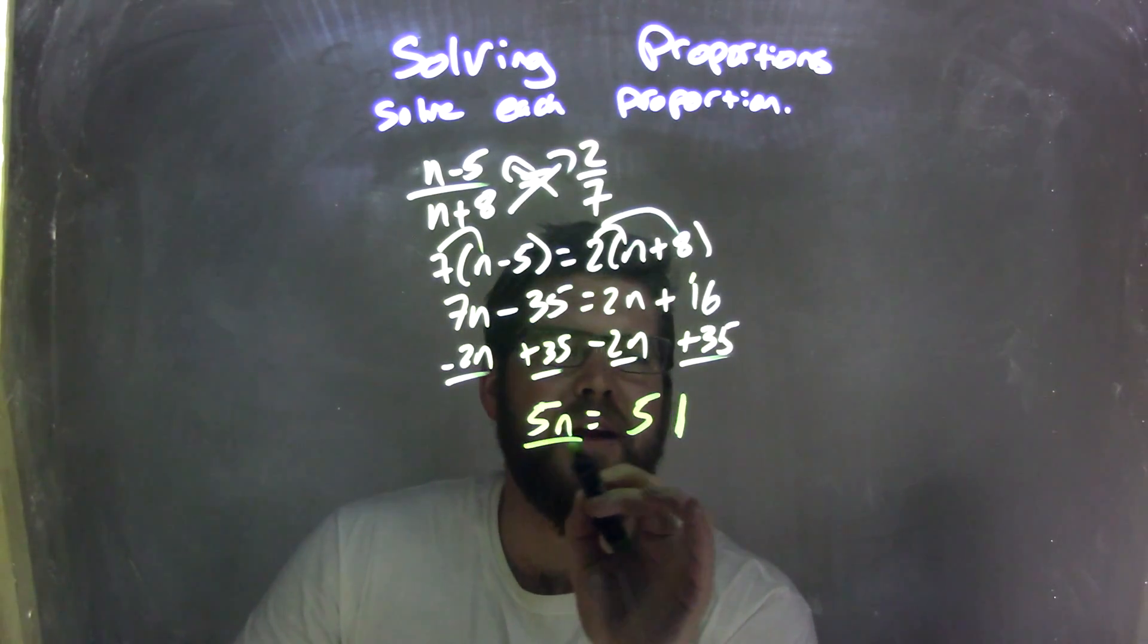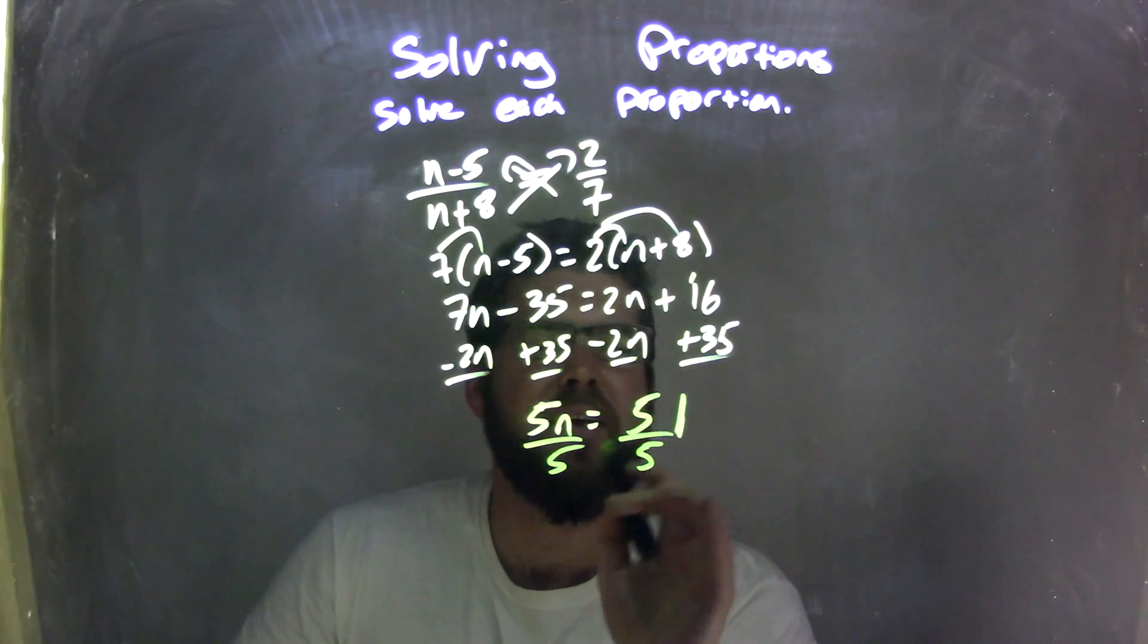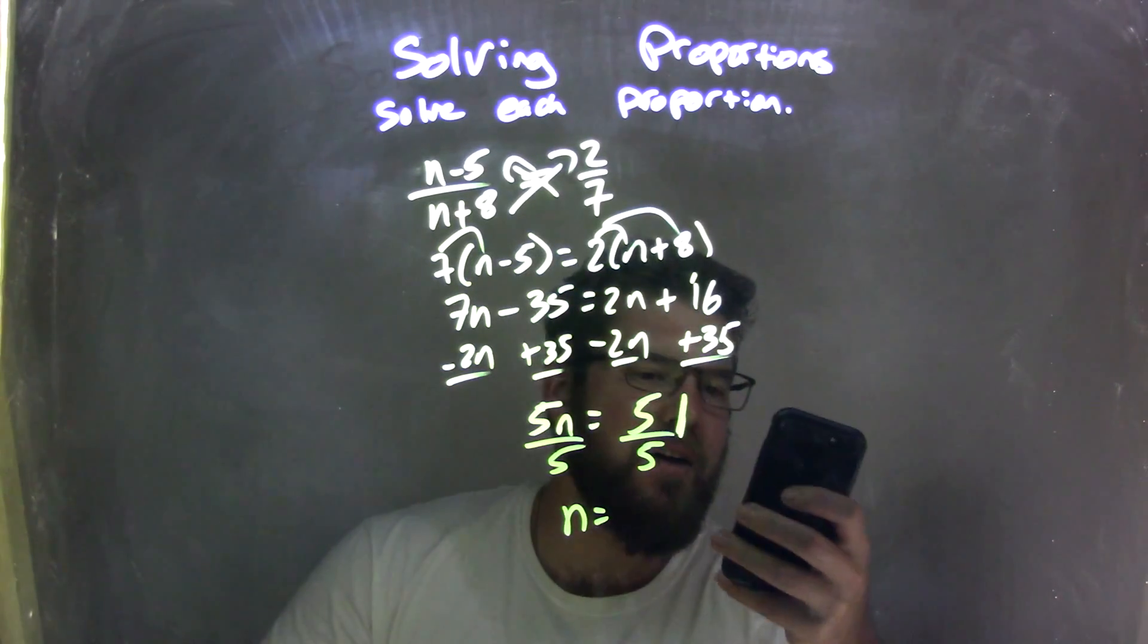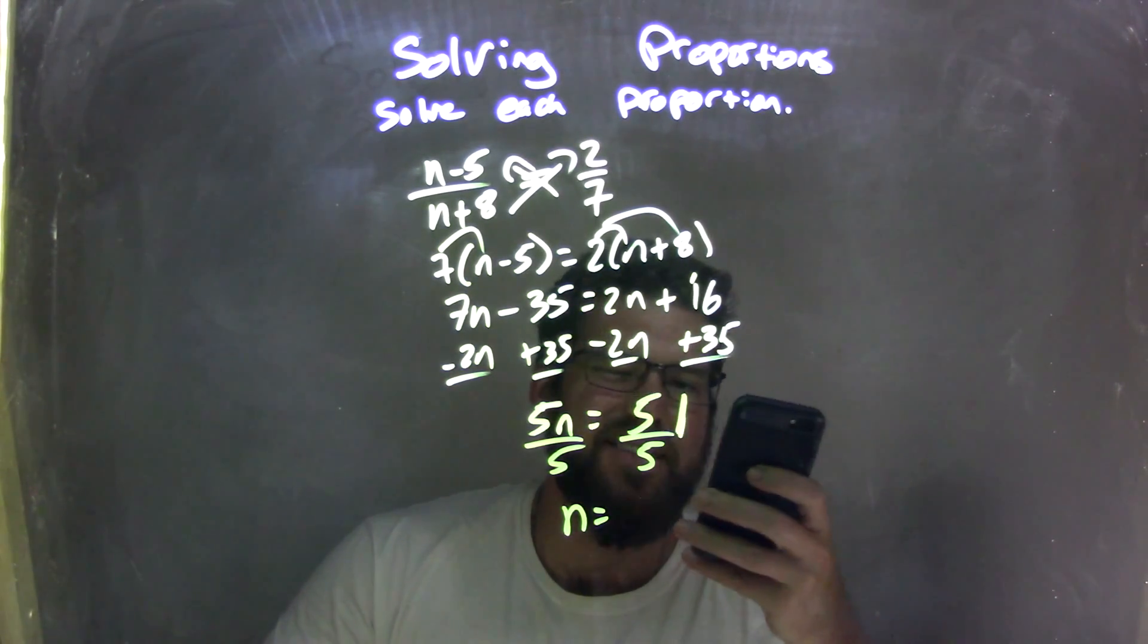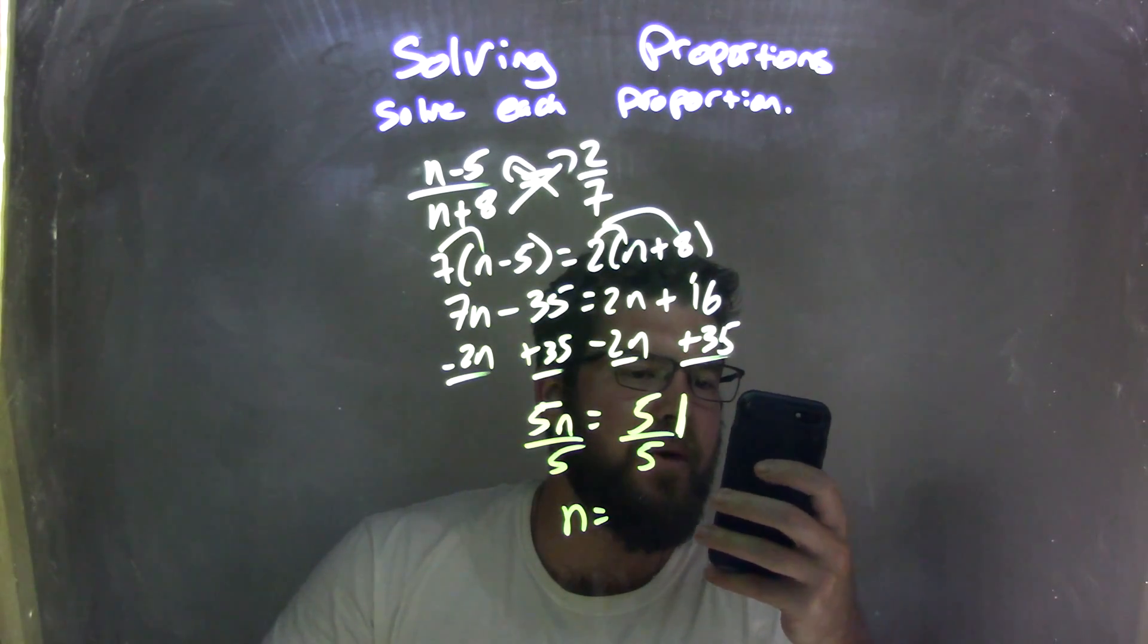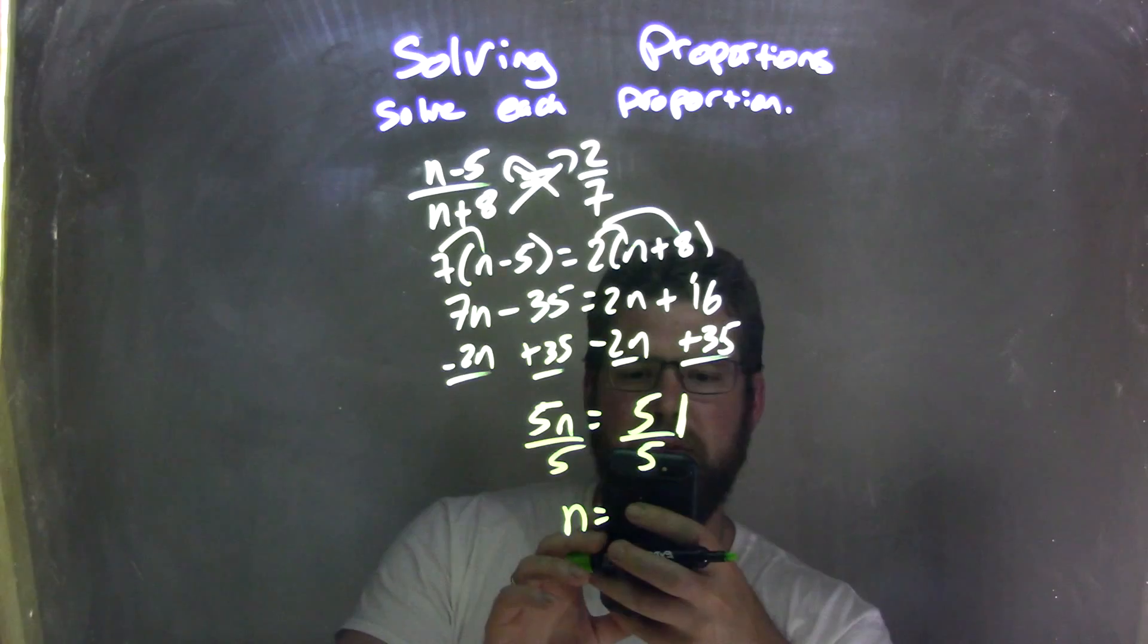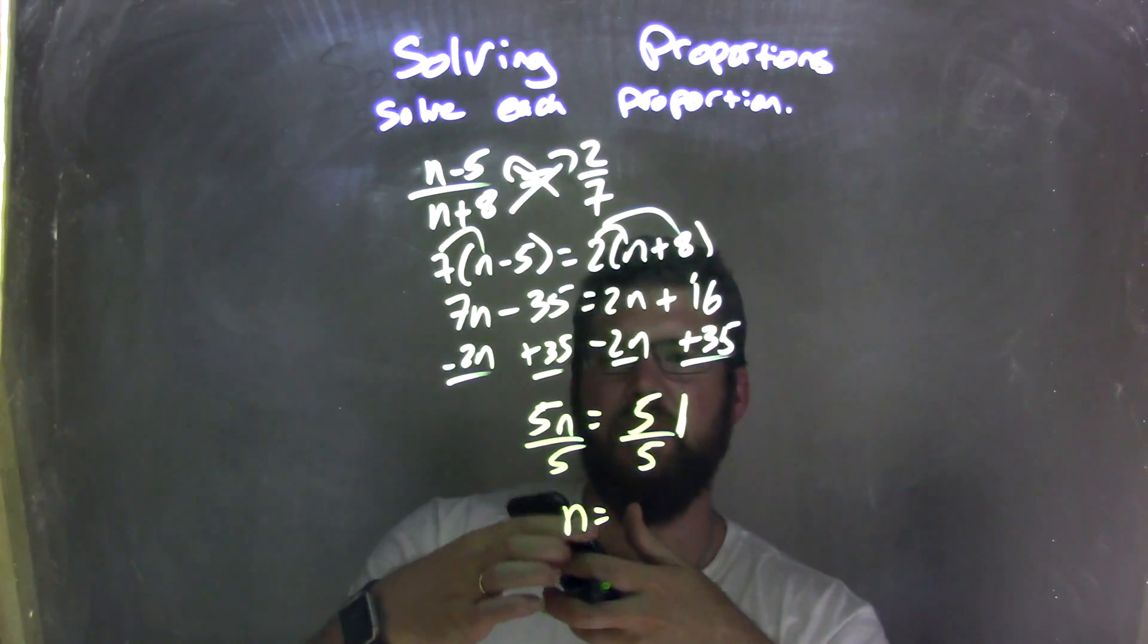So we have 5n equals 51. I divide by 5 to both sides, leaving me with n equals—well, what's 51 divided by 5? I don't know off the top of my head, it's 10 point something. 51 divided by 5 comes out to be 10.2, right? 51 divided by 5, yep, it's 10.2.